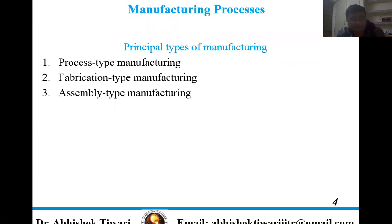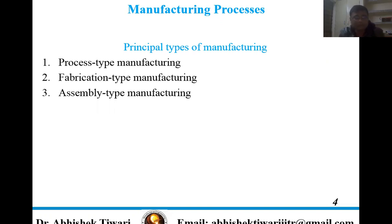The principal types of manufacturing can be classified into three types: process type manufacturing, fabrication type manufacturing, and assembly type manufacturing. Process type manufacturing involves continuous flow of materials through a series of process steps. Fabrication type involves a series of operations such as rolling, machining, and welding. Assembly type manufacturing is done by putting together parts and components to get a complete product such as a machine.